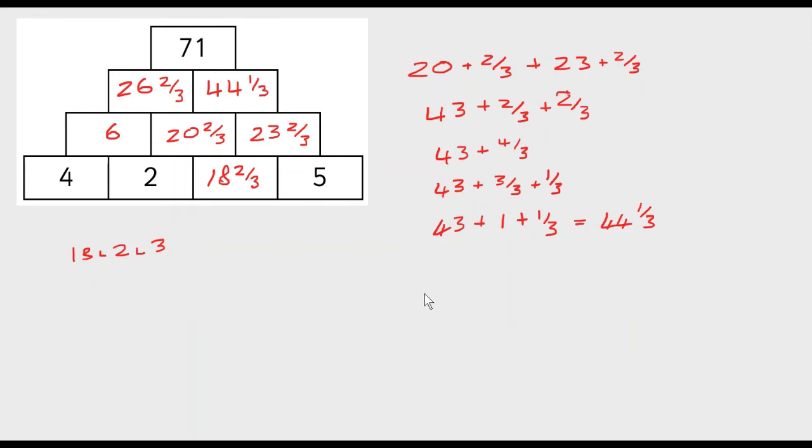Now, if we add those two, 26 plus 2 thirds plus 44 plus 1 third. 26 plus 44 makes 70. Let's just write those two down. 26 plus 44 and then 2 thirds plus 1 third. And some of you might be getting ahead of me now. 26 plus 44 is 70. 2 thirds plus 1 third is 3 thirds. We know that 3 thirds is 1. 70 plus 1 makes 71, which is the number we wanted at the top.